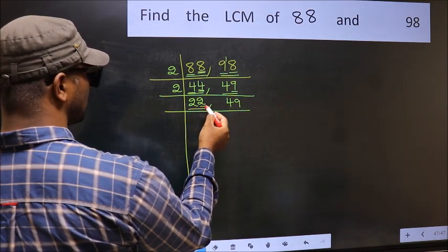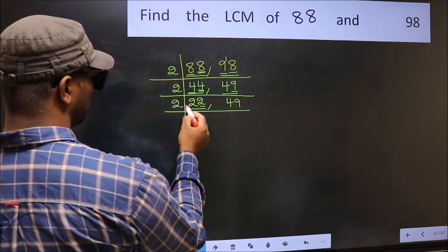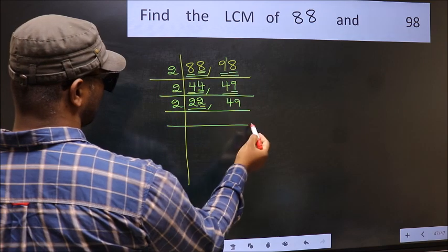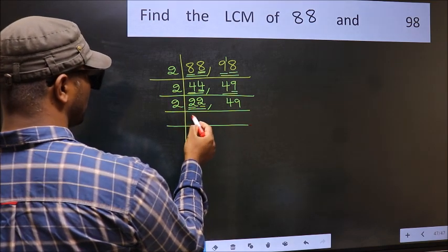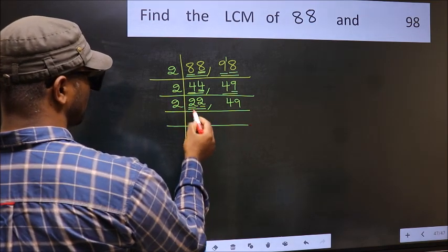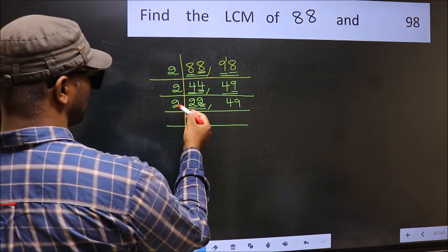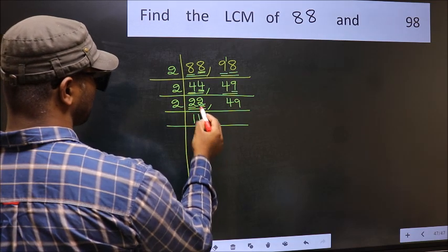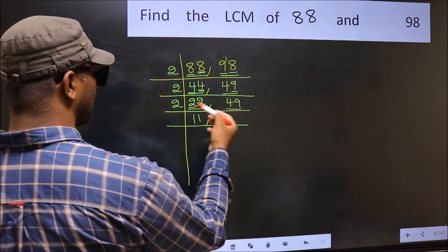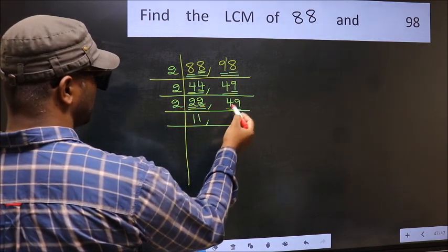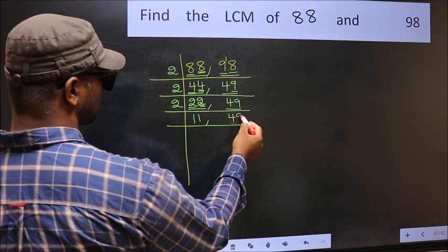Now we have 22. Last digit 2 — it's even, so take 2. First number 2: when do we get 2 in the 2 table? 2 ones are 2. The other number 2: 2 ones are 2. The other number 49 — not divisible by 2, so write it down as it is.